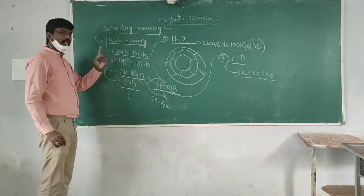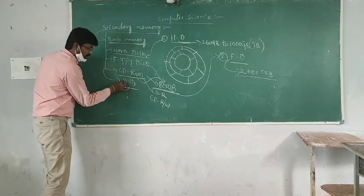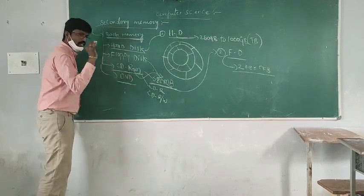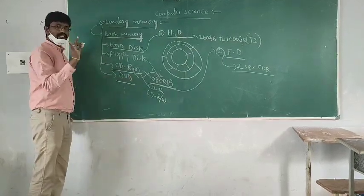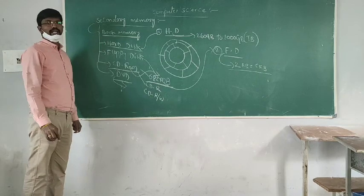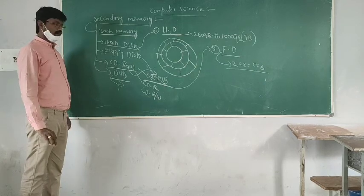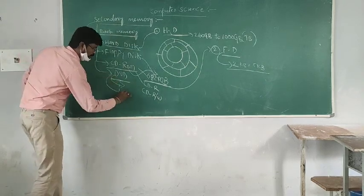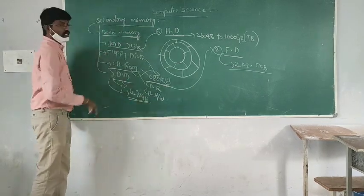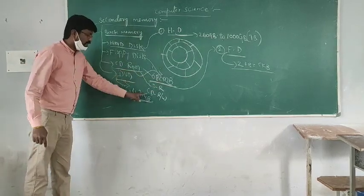Next is DVD. DVD stands for Digital Versatile Disk. It supports read and write. It is used to store data permanently. The maximum capacity of DVD is 4.72 GB, compared to CD-ROM's 682 MB.